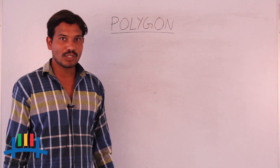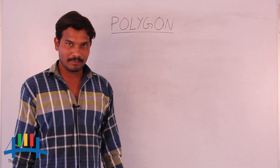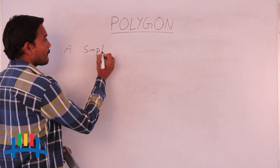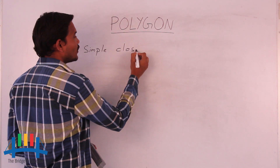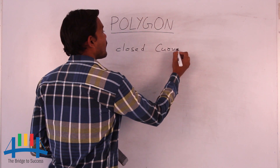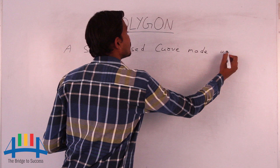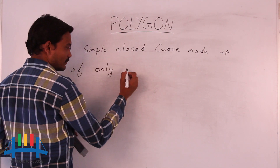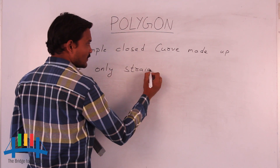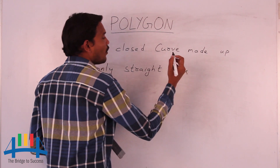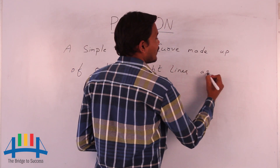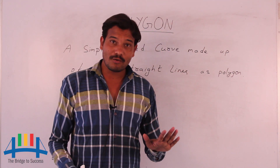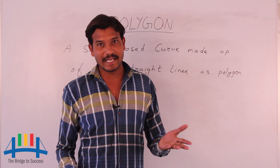Hello everyone, today we are going to discuss about polygons. So first of all, what do you mean by a polygon? A polygon is nothing but a simple closed curve made up of only line segments or straight lines. That is what we call a polygon.